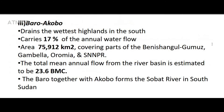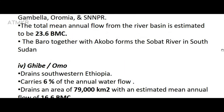The Barro/Akobo basin drains the wettest highlands in the south and carries 17% of the annual water flow, covering an area of 75,912 square kilometers, including parts of Benishangul-Gumuz, Gambela, and Oromia regional states. The total mean annual flow from the river basin is estimated to be 23.6 BCM. The Barro River, together with the Akobo, forms the Sobat River in South Sudan.